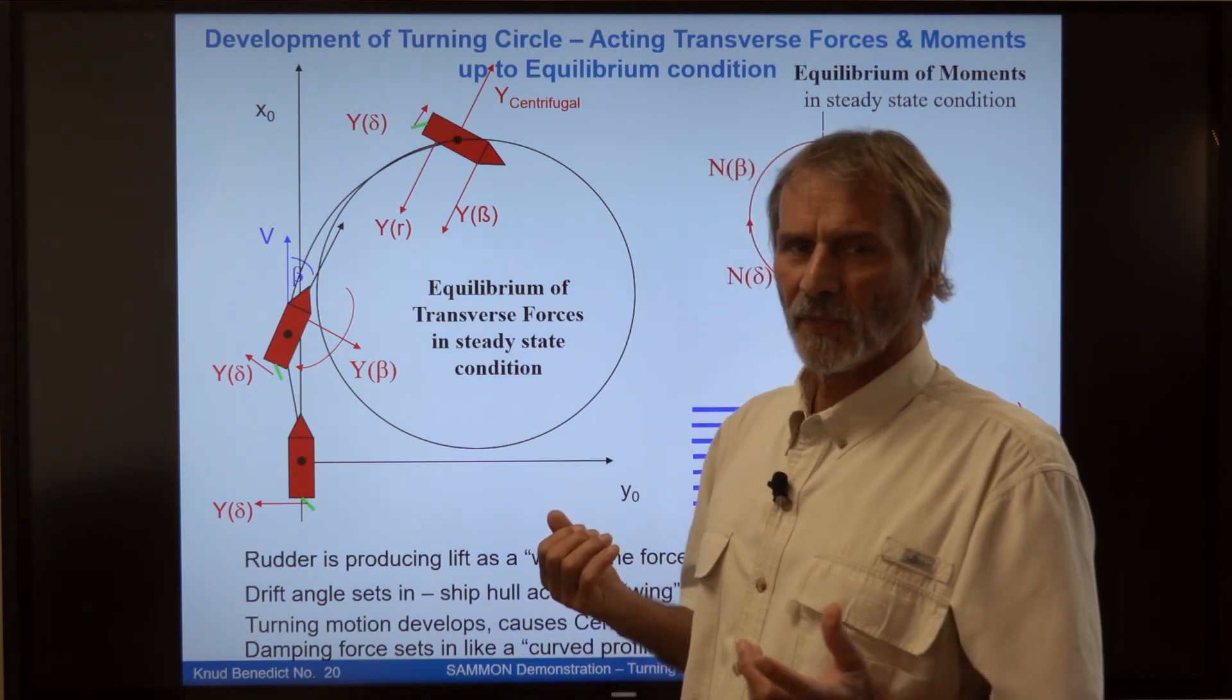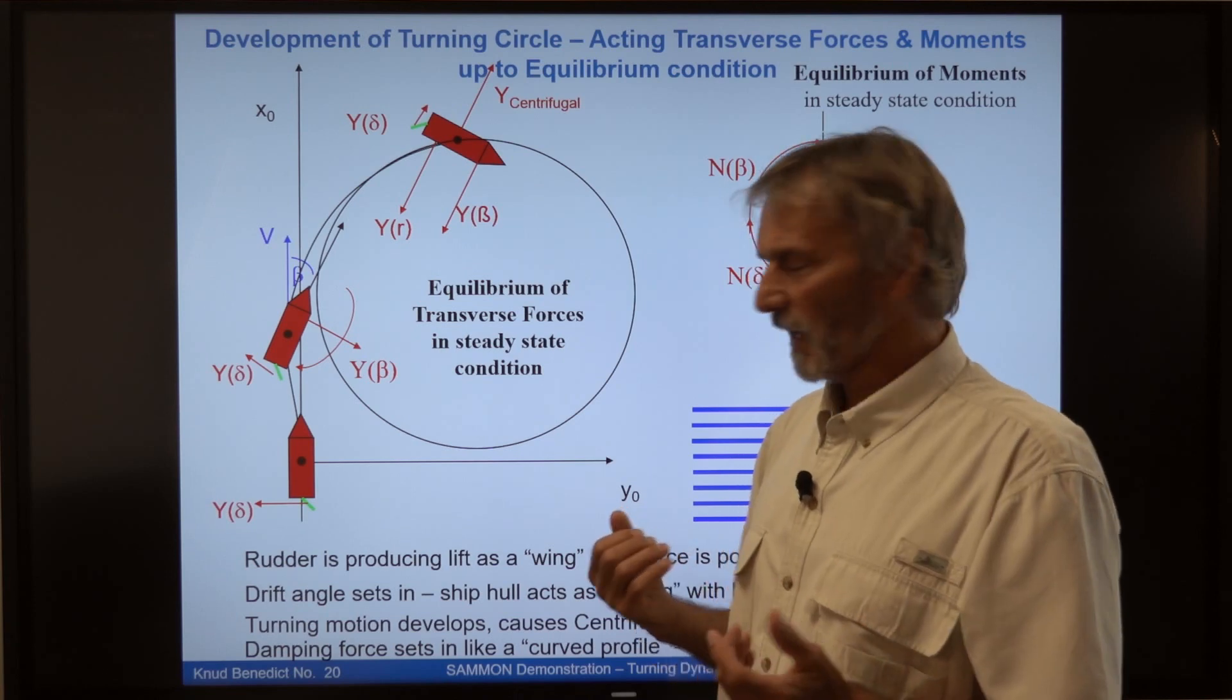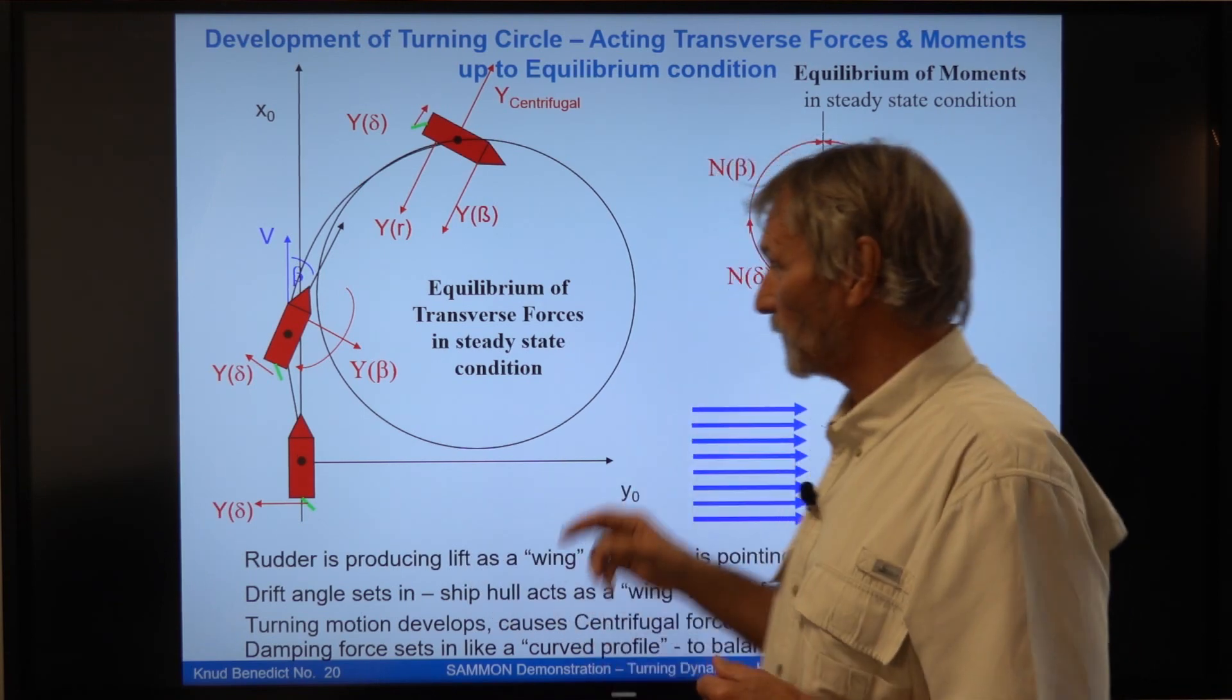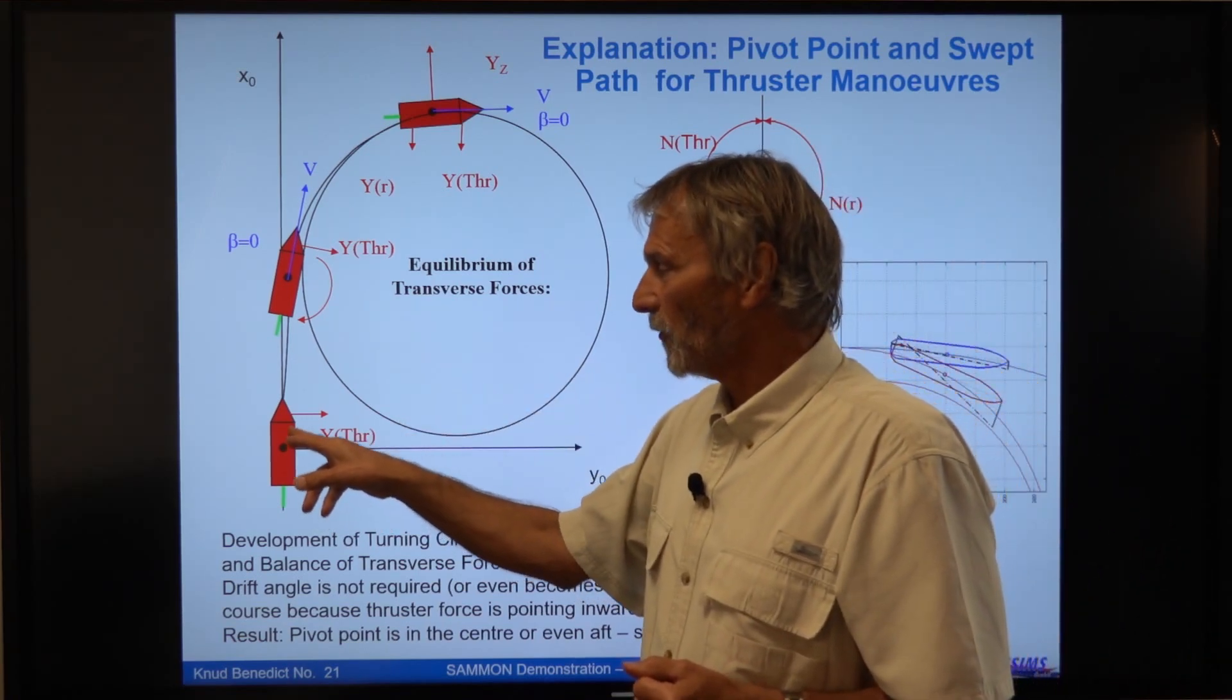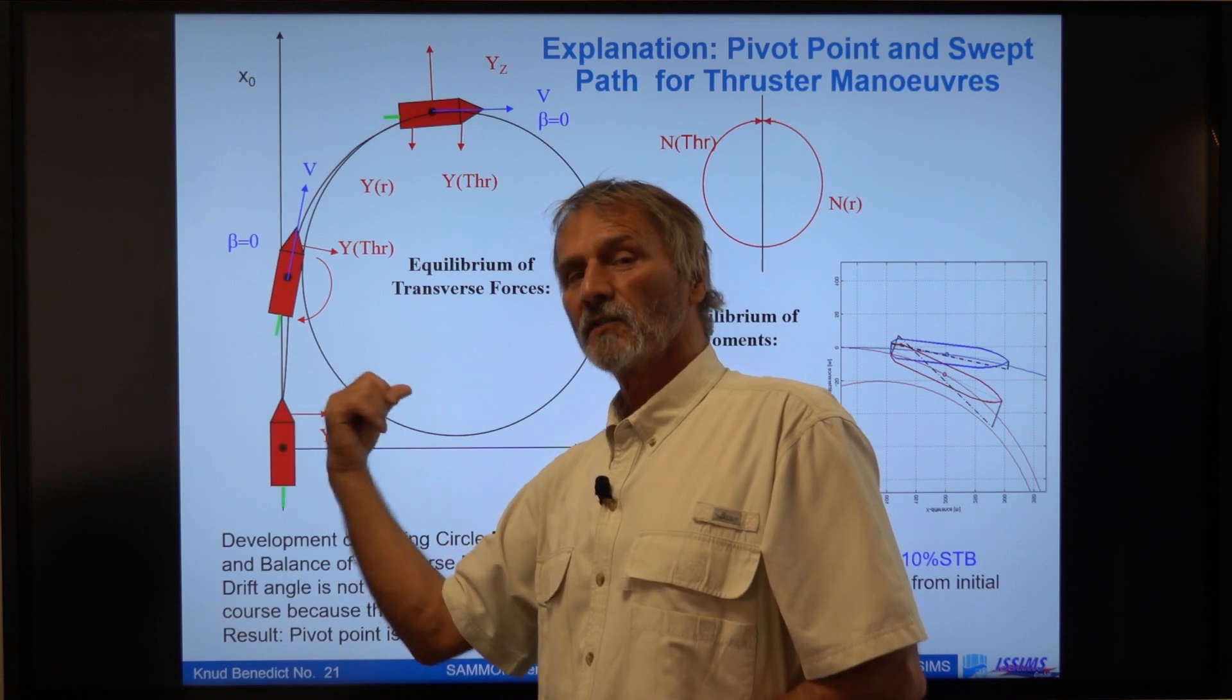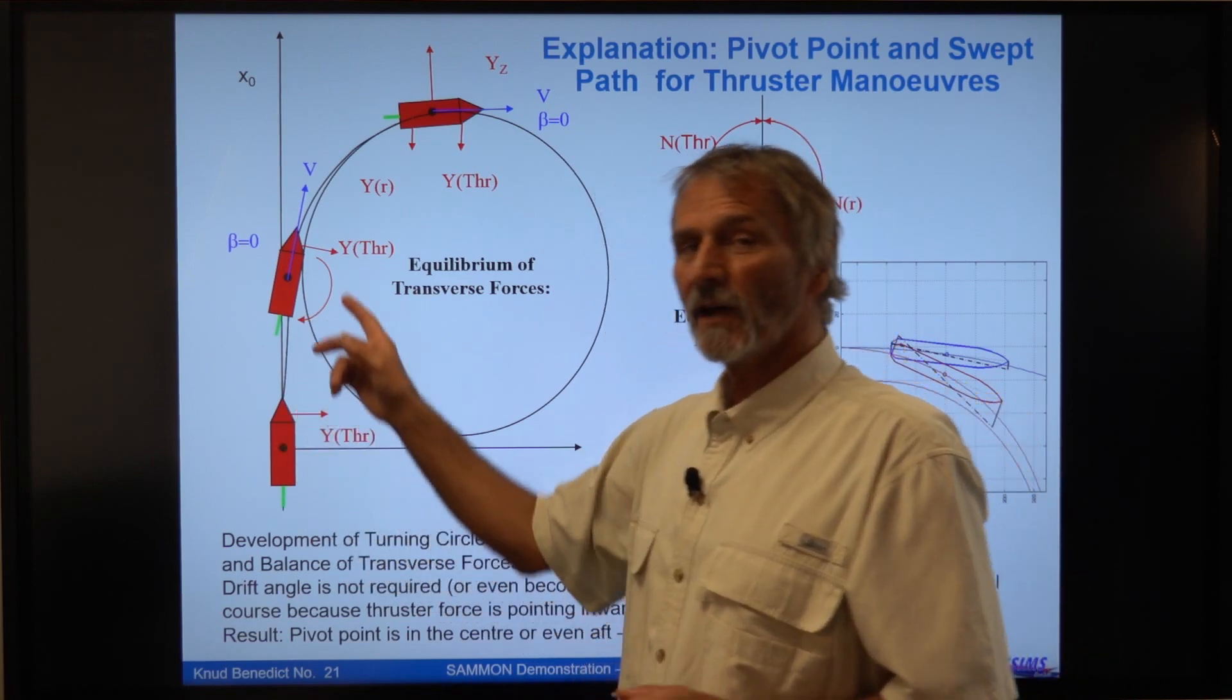The final part of the discussion is thrusters. What is the effect of thrusters? And what we can simply say, if you have a stern thruster, it's the same effect as a rudder. The bow thruster is the difference. And I can tell you why. If you have a bow thruster here in the fore part of the vessel, and this bow thruster is pulling the bow in this direction, then you prevent the ship from drifting. So the ship is changing her course without a drift angle.